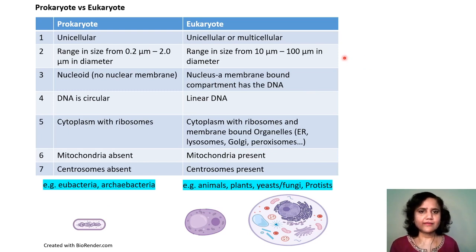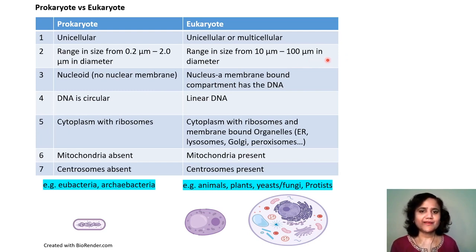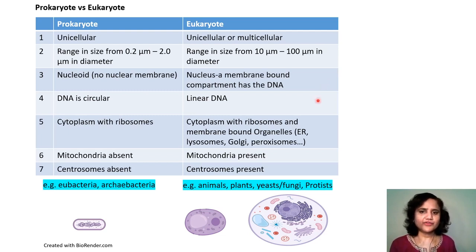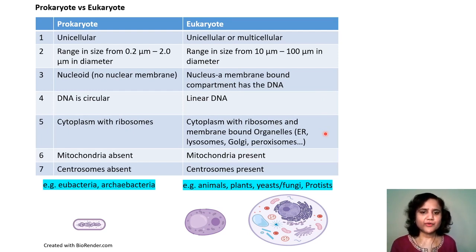Eukaryotes are slightly larger cells, ranging in size from approximately 10 microns to even 100 microns. They have a nucleus, which is a membrane-bound compartment that contains the DNA. The DNA is often linear, organized in chromosomes, and the cytoplasm has ribosomes and several membrane-bound organelles such as the endoplasmic reticulum, lysosomes, Golgi apparatus, peroxisomes, etc. Mitochondria are present and produce ATP, and they also generally have centrosomes.